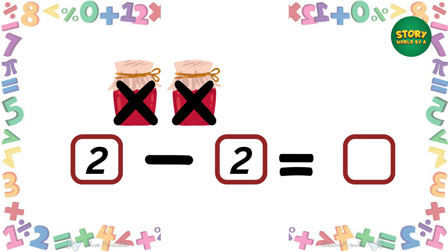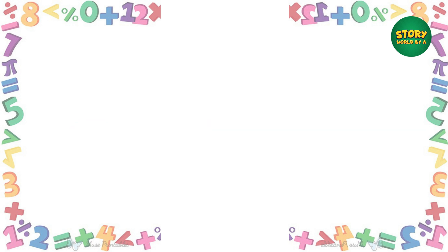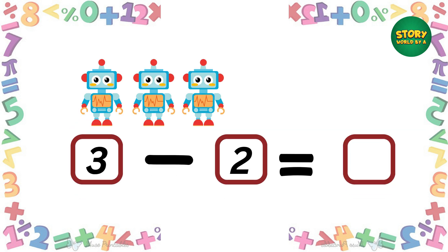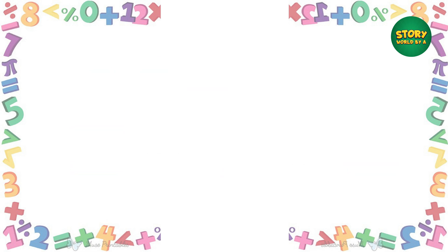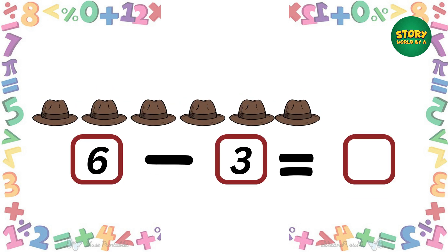If we have two jam bottles and eat two, how many are left? Yes, zero! If we have three robots and two are lost, how many are left? That's right, one robot! If we have six caps and we give three to a father, how many are left? Awesome — three caps!